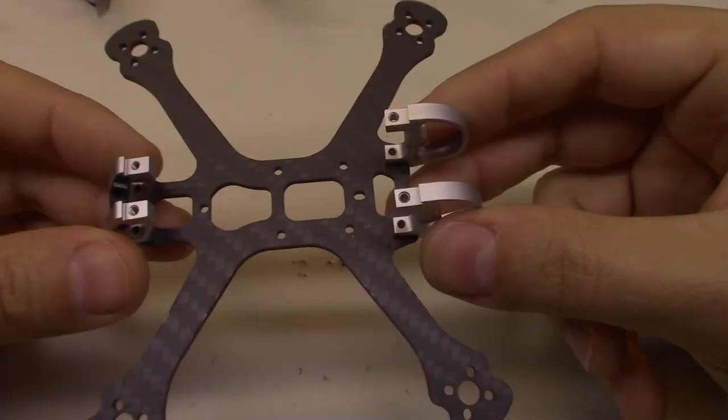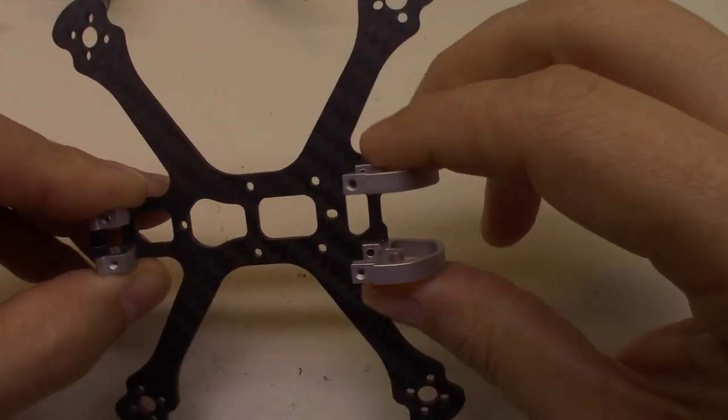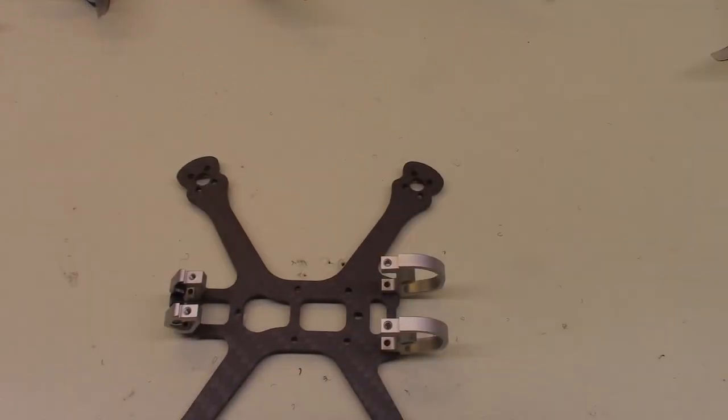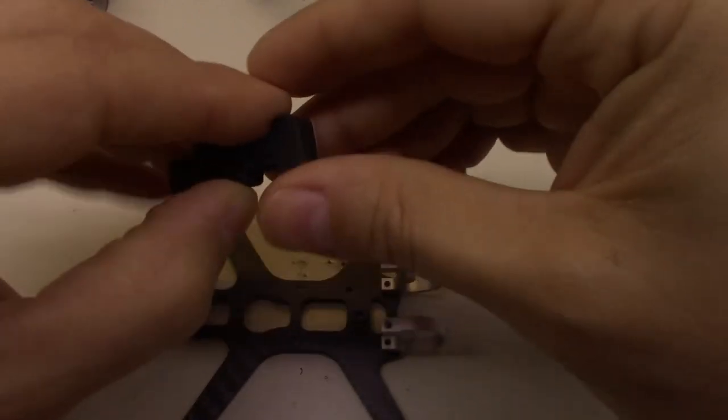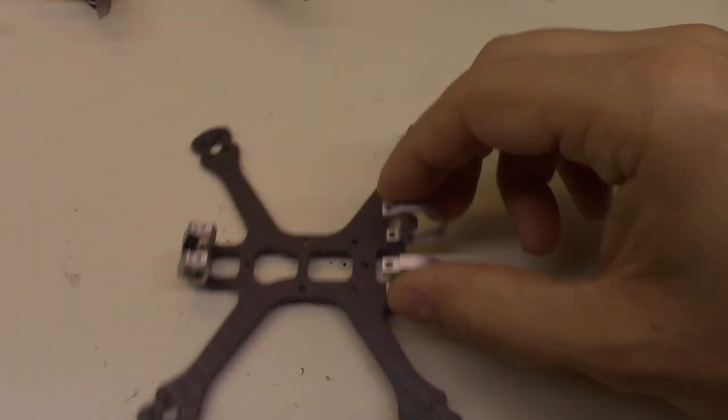All right, so that's the bottom put together. Now, if you're going to be using the whoop adapter, you probably want to install that now. But next step is they tell you to go ahead and cut out these landing pads. I'm probably not going to put them on the bottom. I don't really ever use these foam pads, so we'll just set those aside.